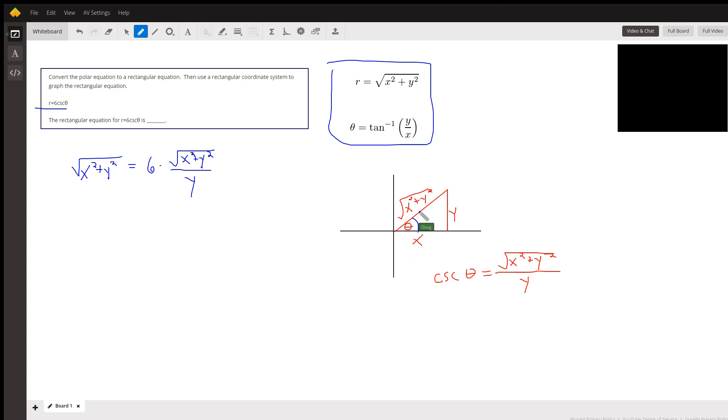That means the cosecant of theta, which is the reciprocal of sine, is the square root of x squared plus y squared over y. So replacing r with the square root of x squared plus y squared equals 6, replace the cosecant of theta with this equivalent, and we can divide both sides by this.